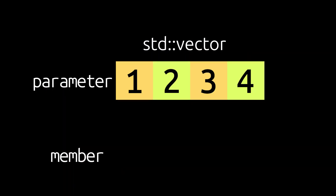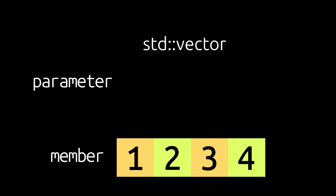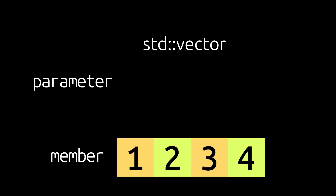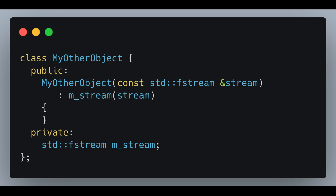There was no way to tell the compiler to just take the internal state of the temporary variable and relocate it into the class member. For example, for std::vector, this could mean copying the internal pointer to the buffer and replacing it with a null pointer inside the temporary object. This approach would save significant performance by avoiding deep copying of content. Another problem was that classes with a deleted copy constructor, such as std::fstream, could not easily be passed to a class constructor and stored as a class member.